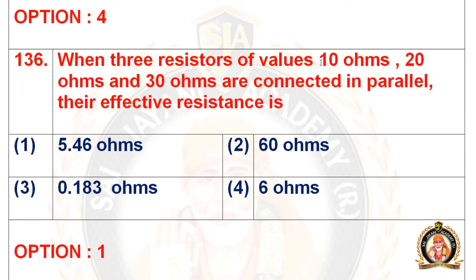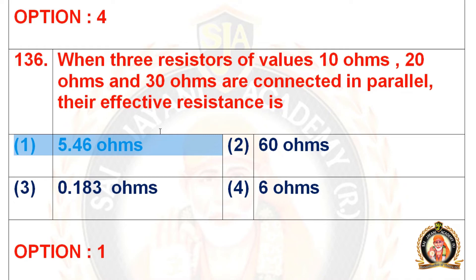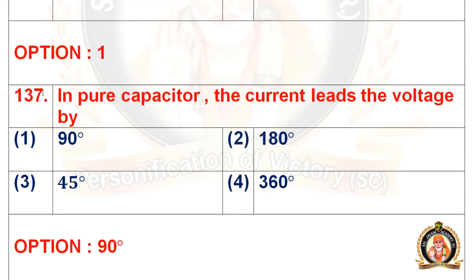Question 136: When three resistors of values 10 ohms, 20 ohms and 30 ohms are connected in parallel, their effective resistance is. Options are 5.46 ohms, 60 ohms, 0.183 ohms, and 6 ohms. The right option is the first option, that is 5.46 ohms.